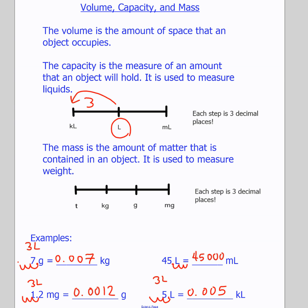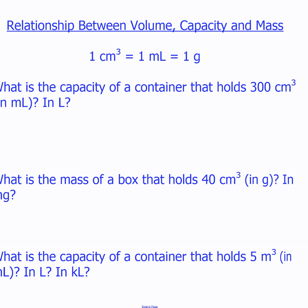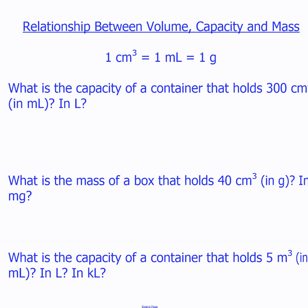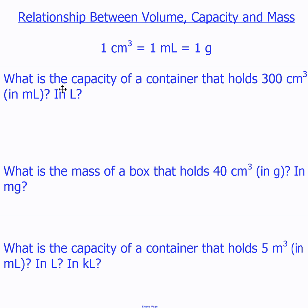It works very much the same way — the only thing that might be difficult is remembering the order, so you can make a little saying to help. Now let's look at the relationship between centimeters cubed, milliliters, and grams. Every object will have slightly different weights, but if we base everything on water: one centimeter cubed equals one milliliter equals one gram. We'll use that relationship for our math.